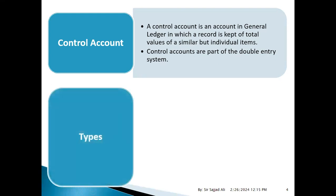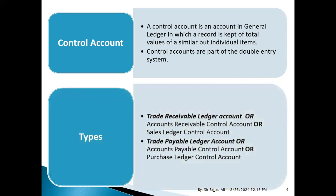Types of control accounts: First, trade receivable ledger account. Second, trade payable ledger account. These are their new names. The previous names are account receivable control account, also called sales ledger control account, and trade payable ledger account, also called purchase ledger control account.